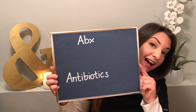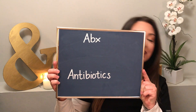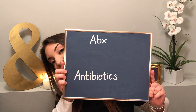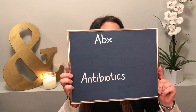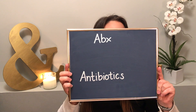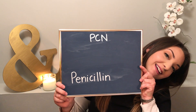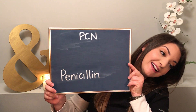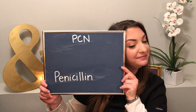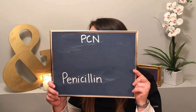The first one we've got is ABX - that's pretty self-explanatory, that means antibiotics. You can use that when you are charting. The second one is PCN and that means penicillin. Usually I use this when somebody's allergic to penicillin - I will put it as PCN.